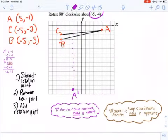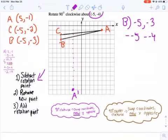Now, I'm going to jump to B. So now for B, I had negative 5, negative 3. And again, repetition can help because now what I know I'm going to do is subtract my rotation point. Minus negative 5, minus negative 4. This gets me to negative 5 minus negative 5 gives me 0. Negative 3 minus negative 4 gives me 1.